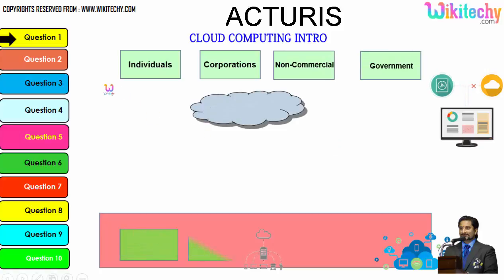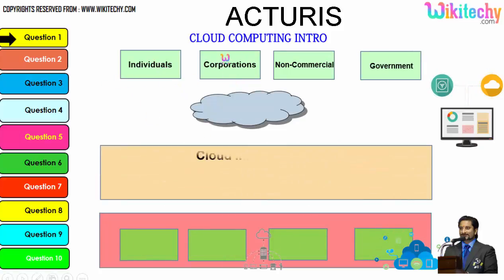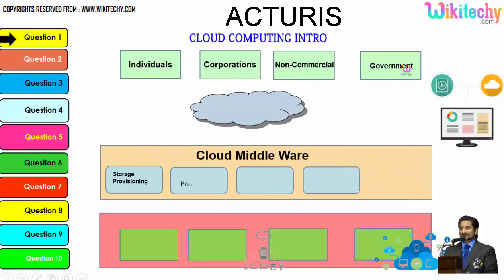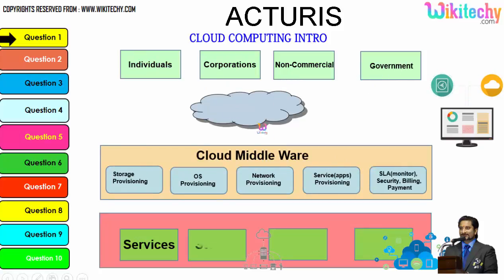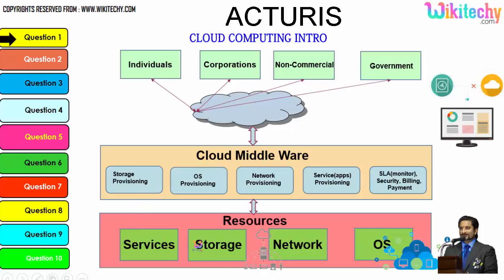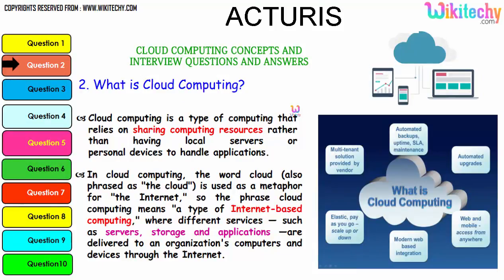There are different types of users: individuals, corporations, non-commercial people, and government. From any of these users, they are able to access services, storage, network, or operating system via the cloud middleware. These are specialized software provided by the cloud service provider to allow end users to access resources. This is how the cloud computing architecture works.